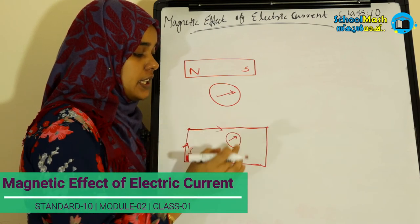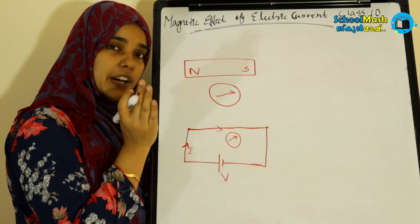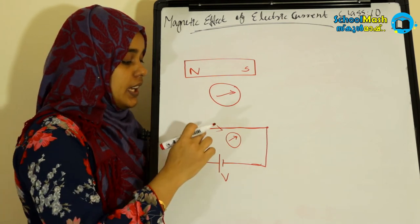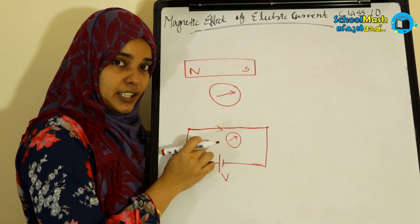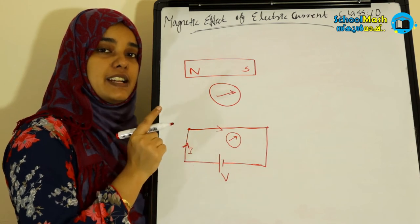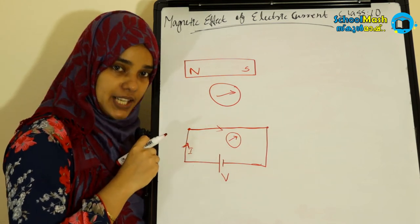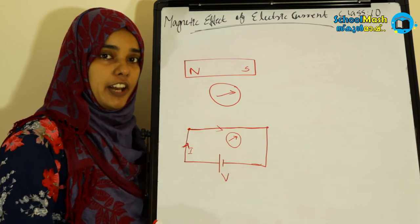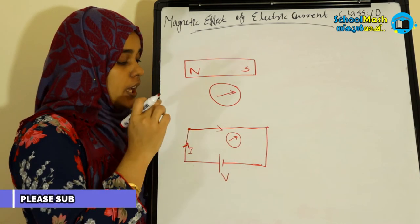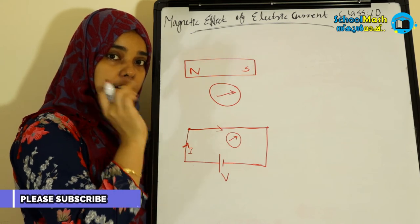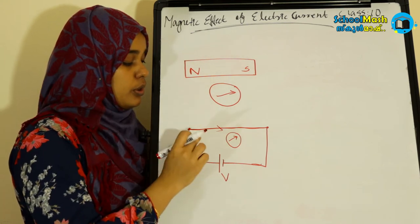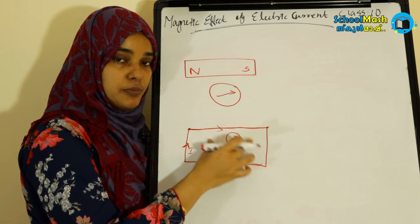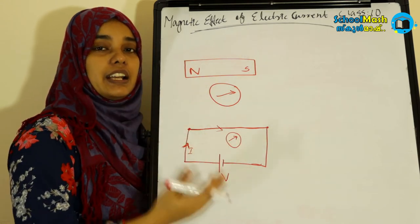If you take a current flowing through a metallic conductor, then it causes a deflection. If you understand the magnetic field produced by this current — that's the magnetic effect of electric current. A current-carrying conductor makes it possible to create a magnetic field.